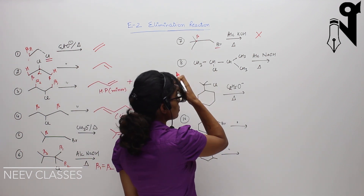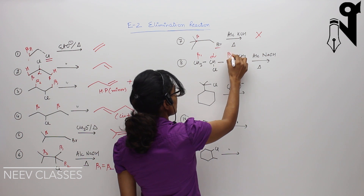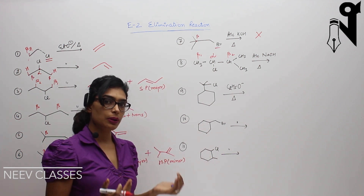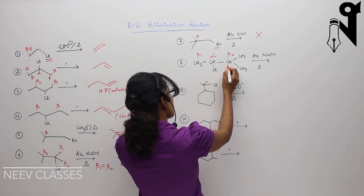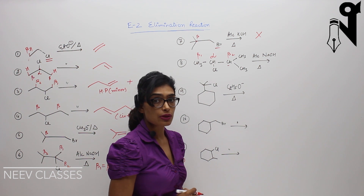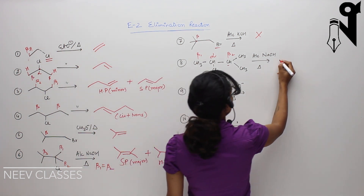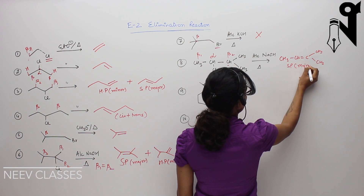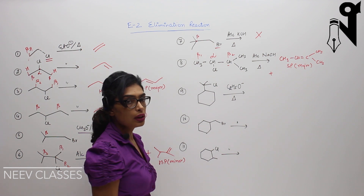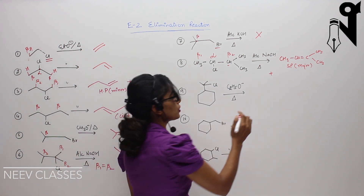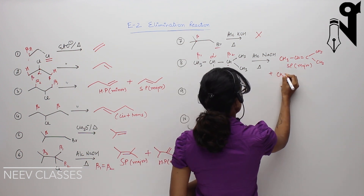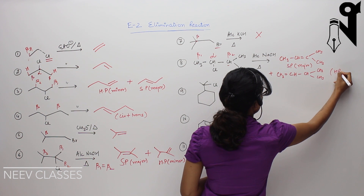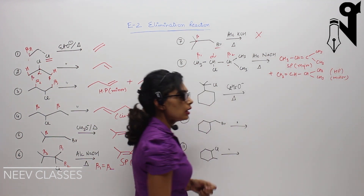For the eighth question, this is my alpha carbon, this is beta 1, and this is beta 2 — a very similar situation to the previous ones. Two types of products are possible. Removal from beta 2, the more alkylated carbon, gives the Zaitsev product, which is major. Removal from beta 1 gives the Hoffman product — that will be CH2=CH-CH(CH3)-CH3 — which is minor.